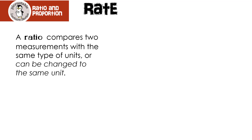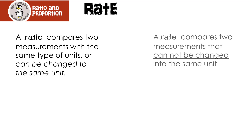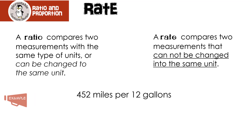Rate. In the last video, we talked about a ratio. A ratio compares two measurements with the same type of units, or units that can be changed to the same units. For example, we could change feet to inches and compare inches to inches. A rate compares two measurements that cannot be changed into the same unit. For example, 452 miles per 12 gallons — I can't change miles into gallons, so that makes this a rate.